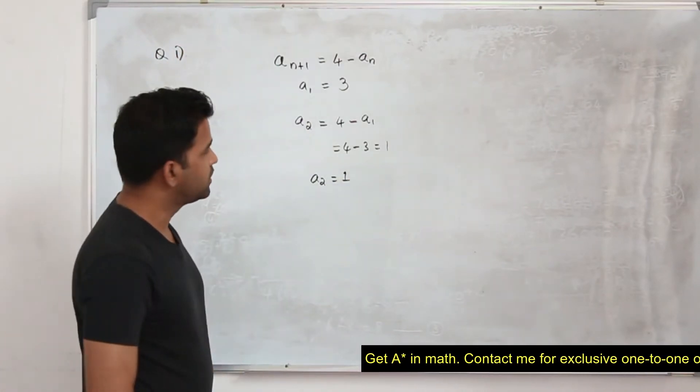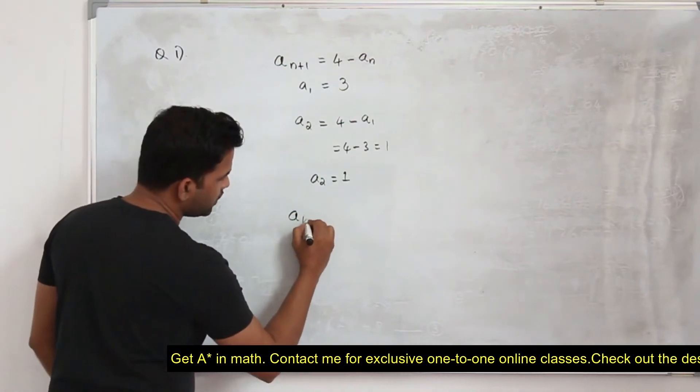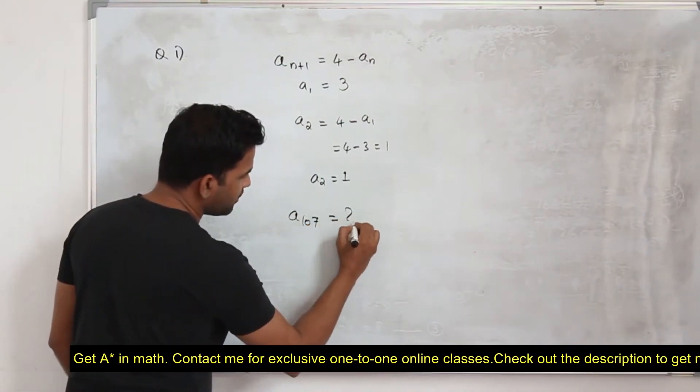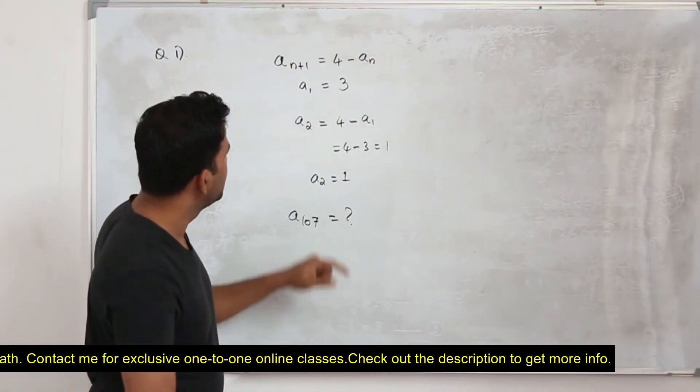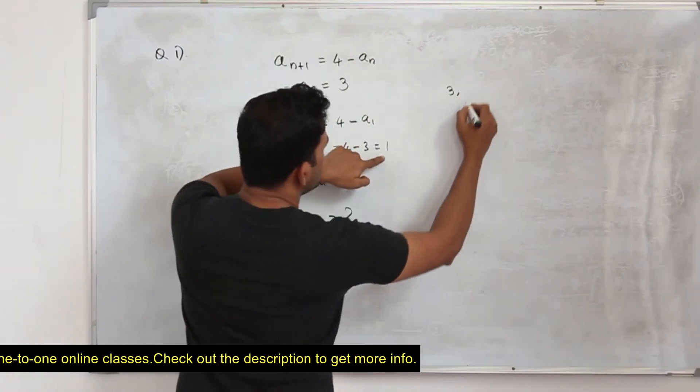That's just one more question. But the second question, they want you to find a₁₀₇. How do we find a₁₀₇? Okay, your first term a₁ is 3, a₂ is 1.